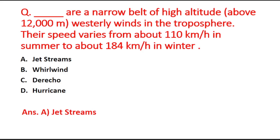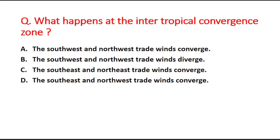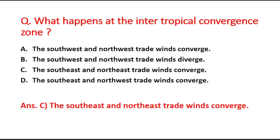Next question: What happens at the intertropical convergence zone? Option A is the southwest and northwest trade winds converge, B is the southwest and northwest trade winds diverge, C is the southeast and northeast trade winds converge. The right answer is option C — at the intertropical convergence zone, the southeast and the northeast trade winds converge.